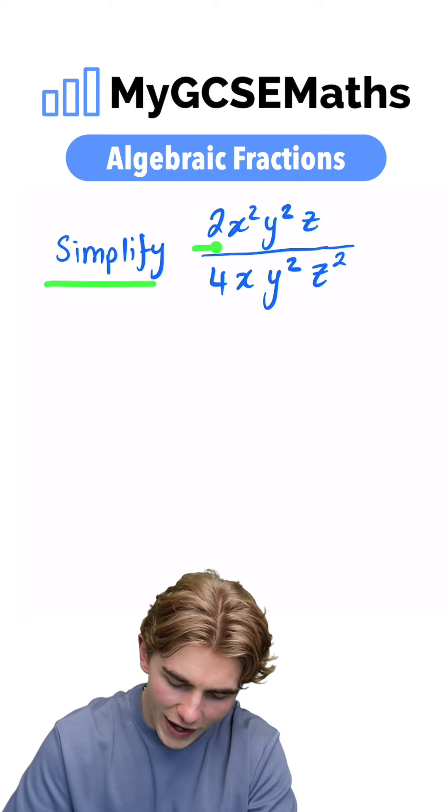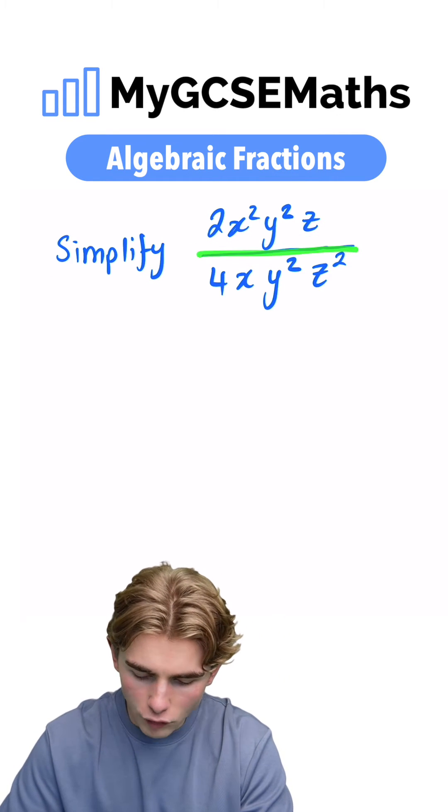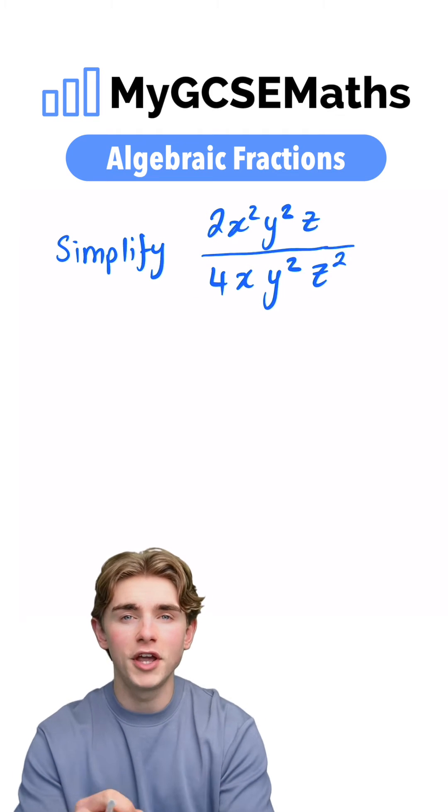This question asks us to simplify 2x squared y squared z over 4xy squared z squared. How are we going to do it?